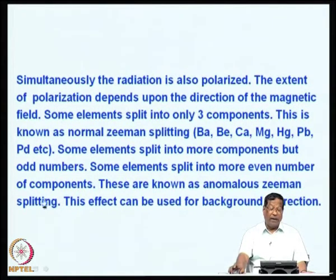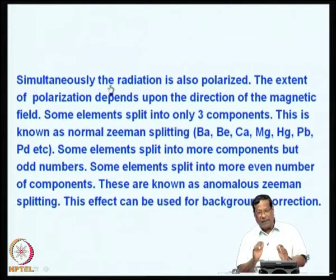The ratio of sigma plus and sigma minus to pi corresponds to approximately 25:50:25—the pi component has maximum intensity at 50 percent, while each sigma component shifted to the left and right carries approximately 25 percent intensity. Simultaneously, when a magnet is placed on the atomic cloud, the terms split into three components and the radiation also becomes polarized—the direction of radiation changes. The extent of direction change depends upon the direction of the magnetic field; the higher the magnetic field, the more the rotation.